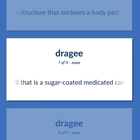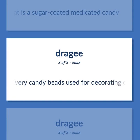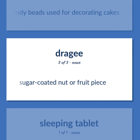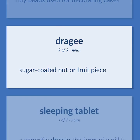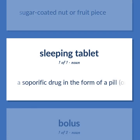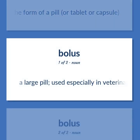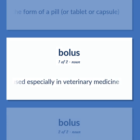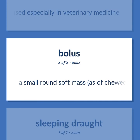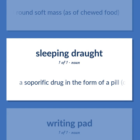Lozenge: a pill that is a sugar-coated medicated candy. Silvery candy beads used for decorating cakes. Sugar-coated nut or fruit piece. A soporific drug in the form of a pill, tablet, or capsule. Bolus: a large pill, used especially in veterinary medicine. A small round soft mass, as of chewed food. A soporific drug in the form of a pill, tablet, or capsule.